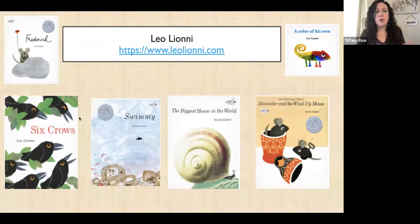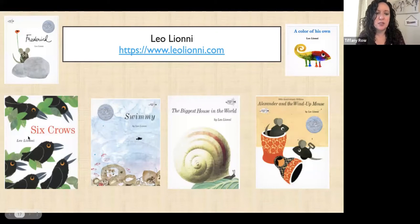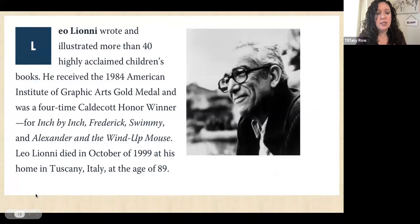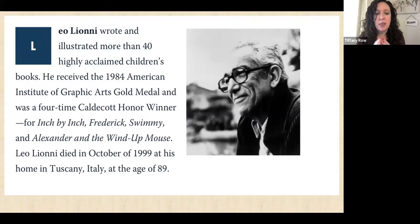Moving on to a classic: Leo Leone. He has written A Color of His Own, Alexander and the Wind-Up Mouse, The Biggest House in the World — these are staples. I always had Leo Leone books in my classroom; you can find them in any library and he's won a lot of awards. He has a great website. He passed in 1999, so his website is a little simpler than some newer authors, but it has a biography and also an interview video called Meet Leo Leone that you can play so students can really see him and get to know him.